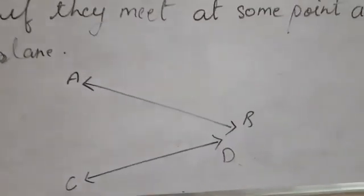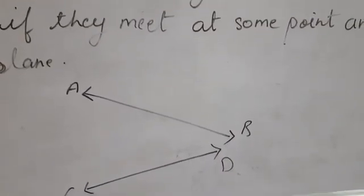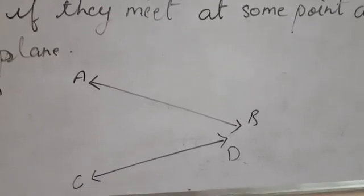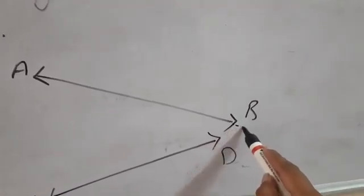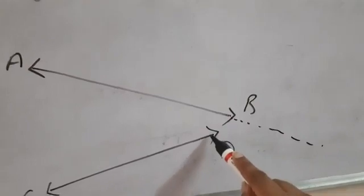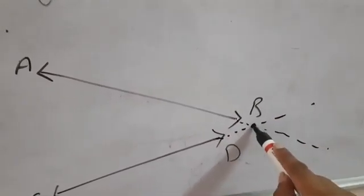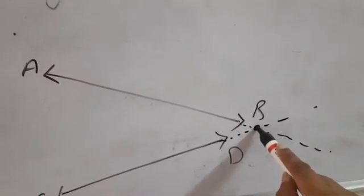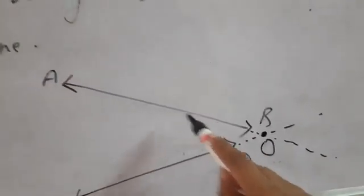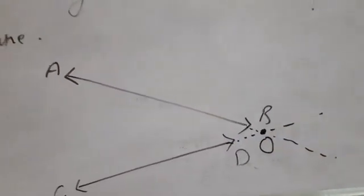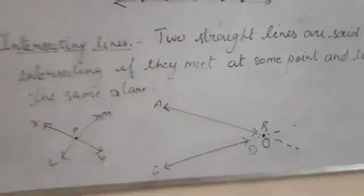Here, lines AB and CD don't appear to meet at any point. But if I extend line AB on one side and CD on the other side, they appear to meet at a point — suppose this is point O. So they are also intersecting lines.